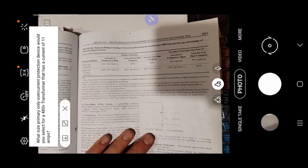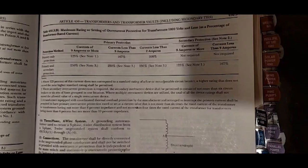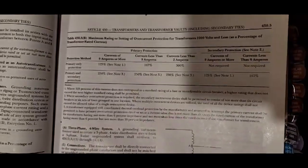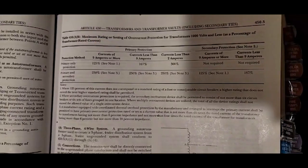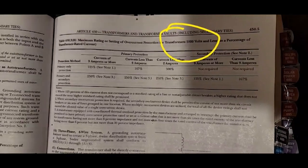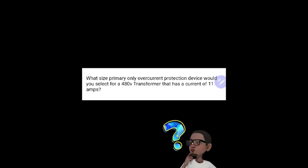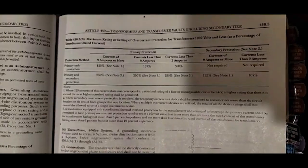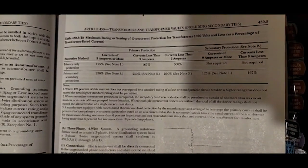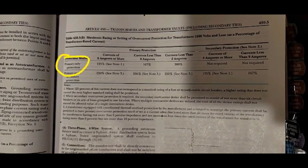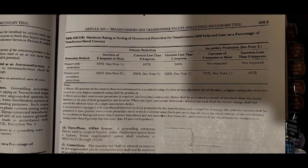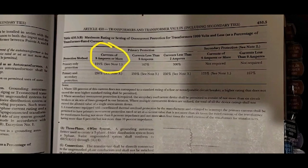Part A is for transformers over 1,000 volts — our transformer is 480 volts so that doesn't apply. Part B is for transformers 1,000 volts or less, which is what we need. Table 450.3a is for 1,000 volts nominal or higher; table 450.3b is for 1,000 volts or less. Our question states 480 volts, 11 amps, and primary protection only, so we fall under currents of nine amperes or more, which requires a 125% demand factor.